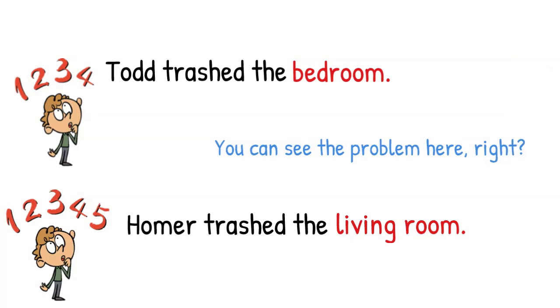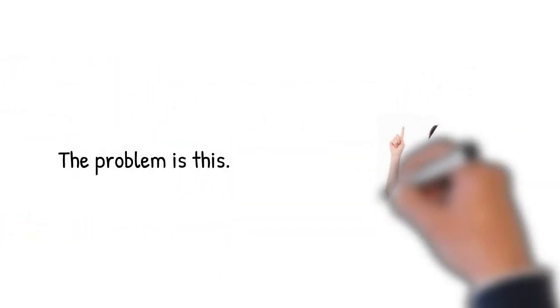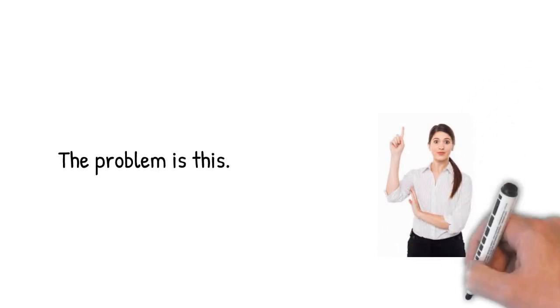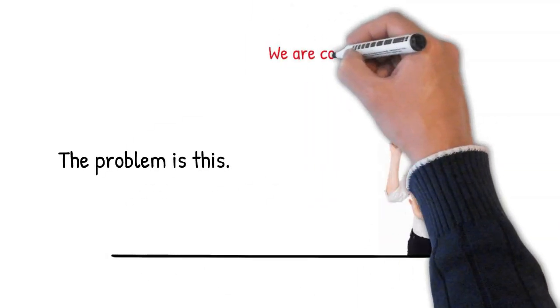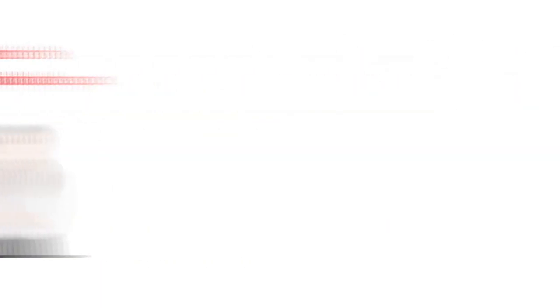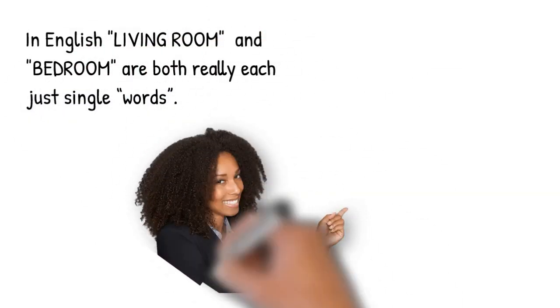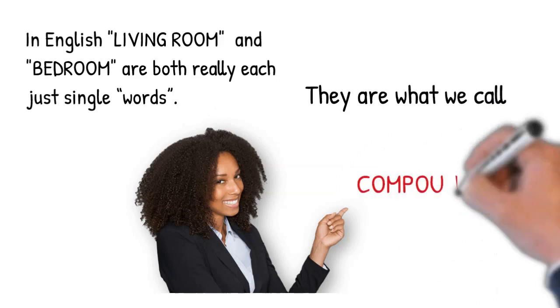You can see the problem here, right? Simply put, the problem is this. We're making the mistake of thinking of words as things defined by white space between them. In reality, in English, words like living room and bedroom are both really each just single words. They're what we call compounds.